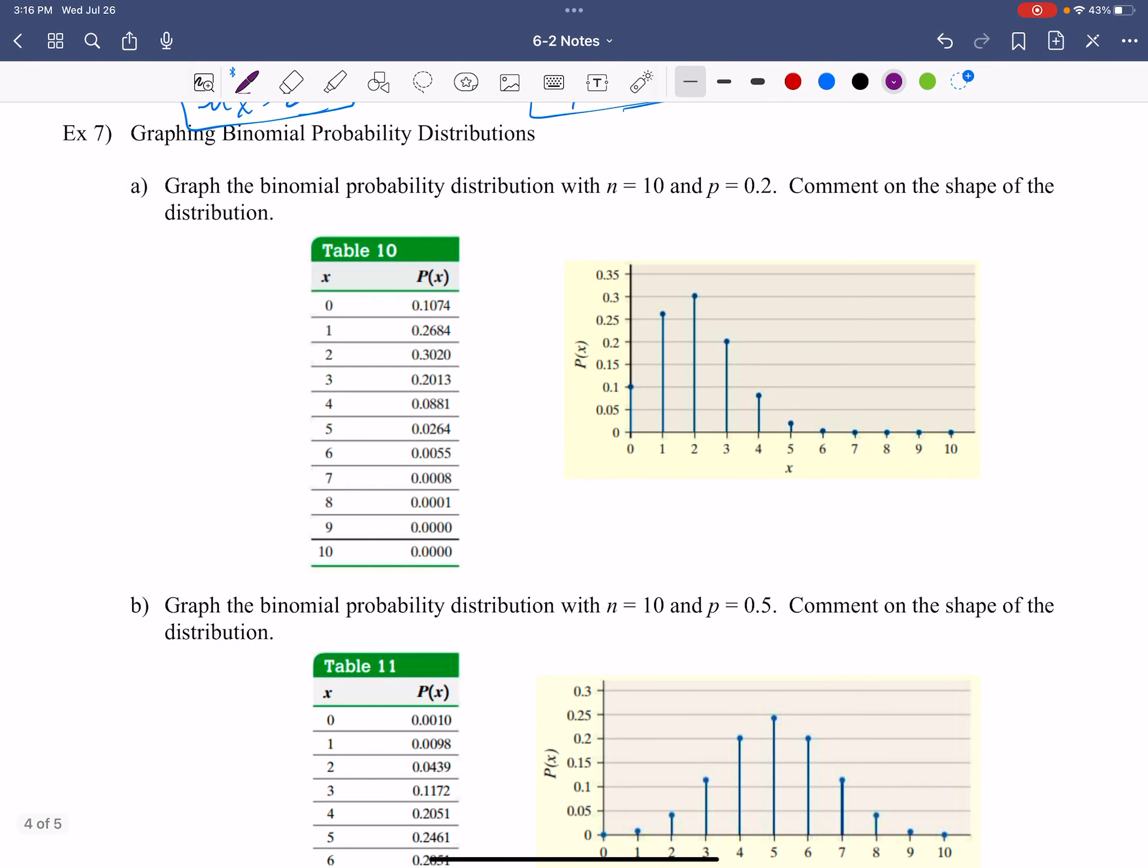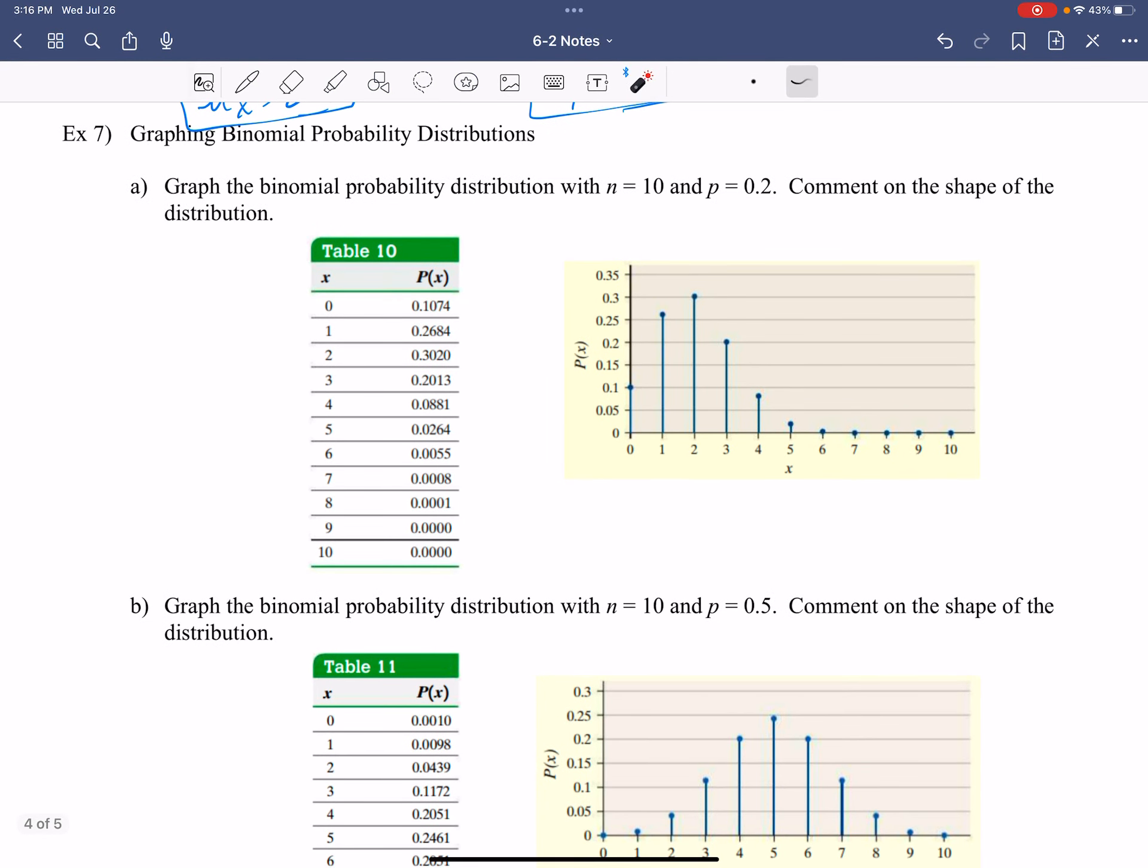All right. Now, graph. Just like we graph everything else, let's just talk about these for a little bit. So we're going to graph this. Well, guess what? I already did it. What I would like you to do is understand the concept behind it. So we're going to graph this distribution where n is 10. So I have 10 pieces of data here. And p is 0.2. Comment on the shape of the distribution.